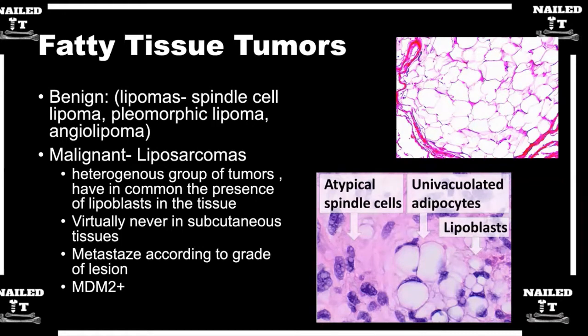A plain lipoma will not have MDM2 amplification. MDM2 is a gene product that the pathologist can stain for, and it helps to differentiate a lipoma from a well-differentiated — or these atypical lipomas we think of in the extremity — that general surgeons call a low-grade liposarcoma. Presence of MDM2 lets you know you're not dealing with a plain lipoma, but more an atypical lipoma. That's really how it's used to help us.